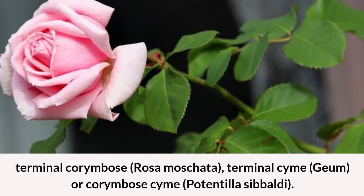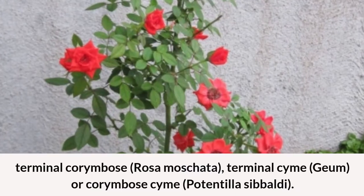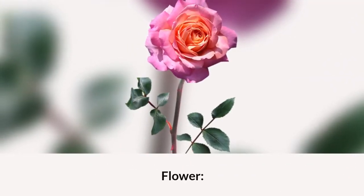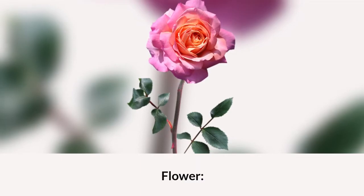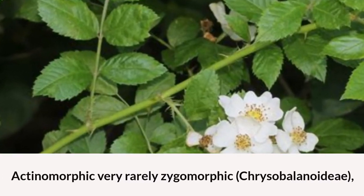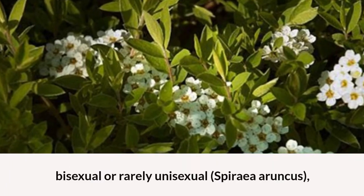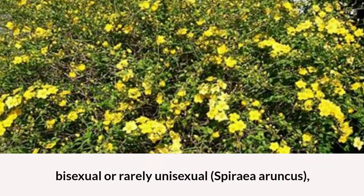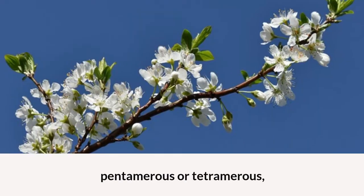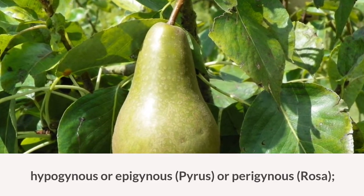Inflorescence may also be terminal racemes, cymes, or corymbose cymes (Potentilla). Flowers actinomorphic, very rarely zygomorphic (Chrysobalanoideae); bisexual or rarely unisexual (Spiraea, Aruncus); pentamerous or tetramerous; hypogynous or epigynous (Pyrus).